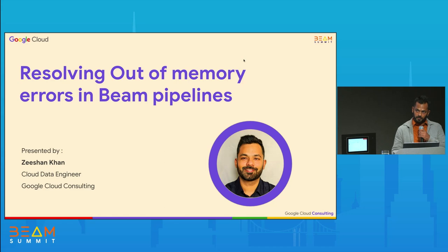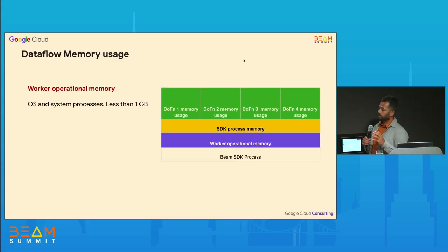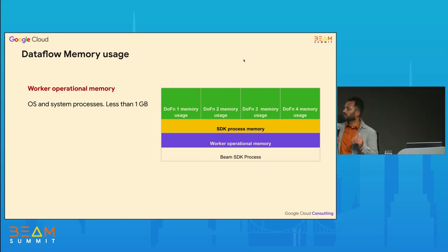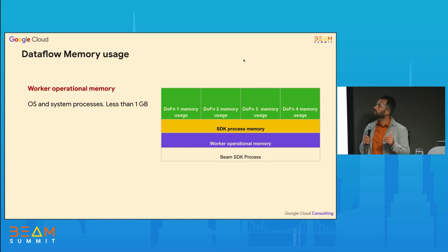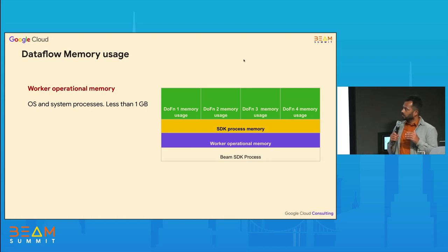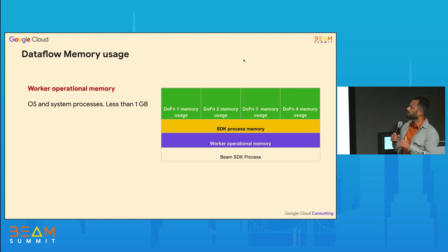Before I begin, I want to give an overview of memory usage. This is specific for Dataflow, but it should be valid for most runners. I have categorized memory usage into three categories, which are shown in three different colors: green, yellow, and blue.